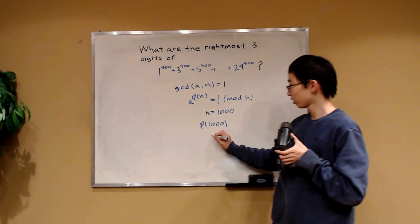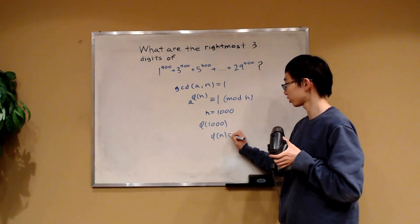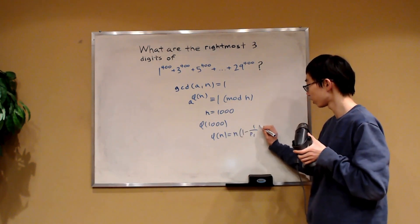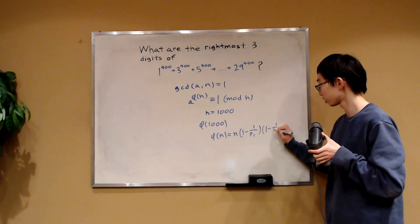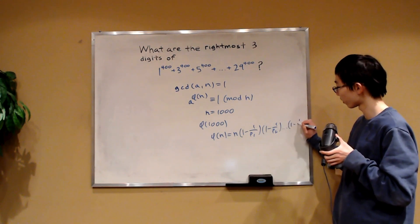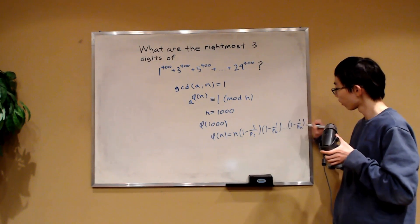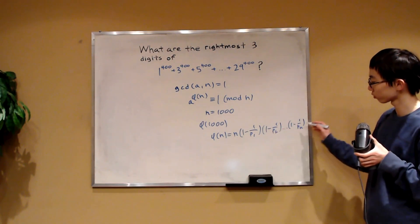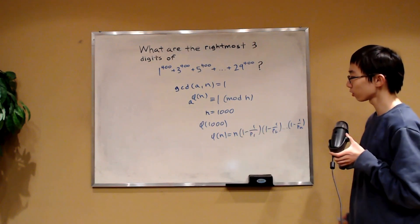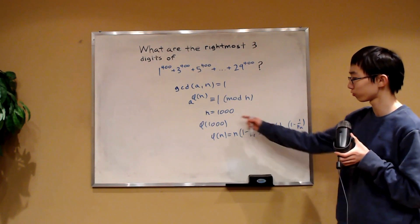Well, the phi of n has a really nice formula. It is equal to n times 1 minus 1 over P1 times 1 minus 1 over P2 all the way to 1 minus 1 over Pk, where P1, P2, all the way to Pk are the distinct prime factors of n. So we can use this formula to compute phi of 1,000.